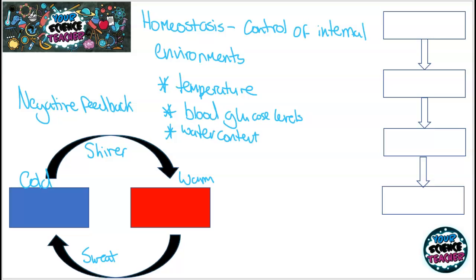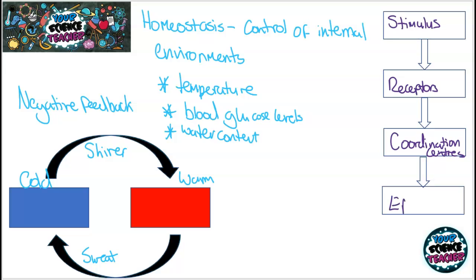For a negative feedback to start, there must be a change in the environment, and we call this change in the environment a stimulus. Stimuli are picked up by things in our body called receptors, which are just there to detect changes in the environment. Then what happens is our coordination center issues a response which is carried out by effectors.